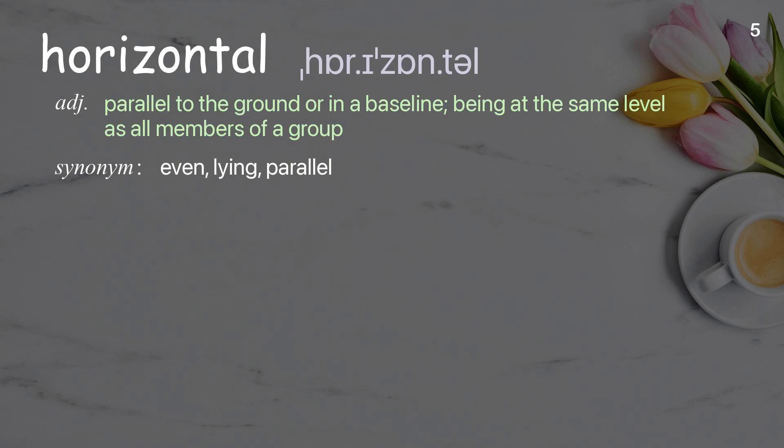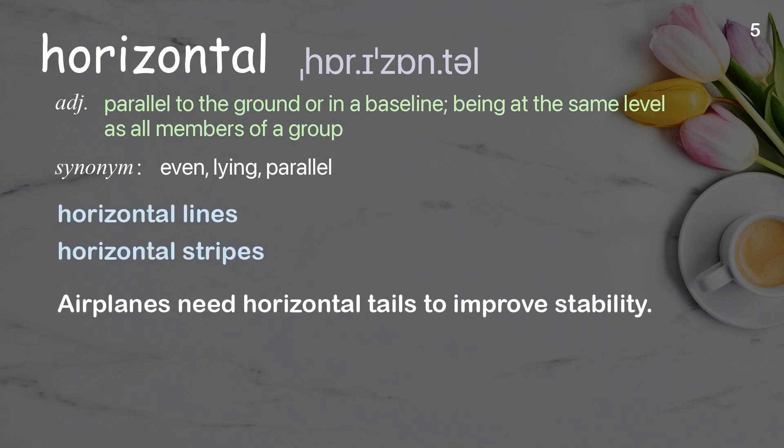Horizontal: parallel to the ground or in a baseline, being at the same level as all members of a group. Examples: horizontal lines, horizontal stripes. Airplanes need horizontal tails to improve stability.